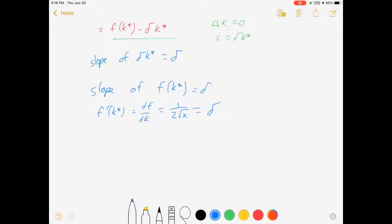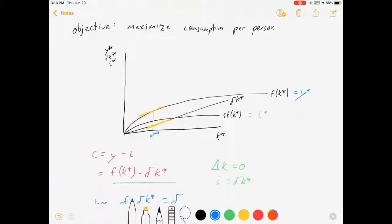I can solve for the level of K that makes that happen. That's 1 over 2 delta equals square root of K, 1 over 4 delta squared equals K star golden rule. This is the K that will set these two lines as far apart as possible, leaving us with the most consumption possible in our steady state.